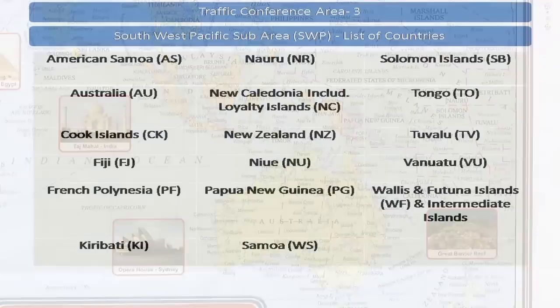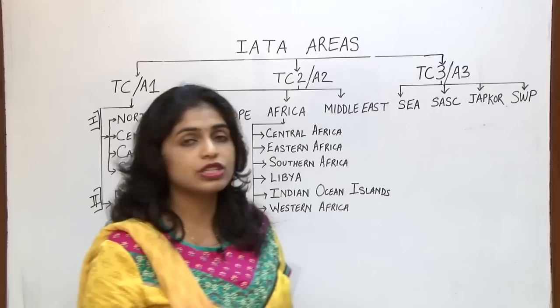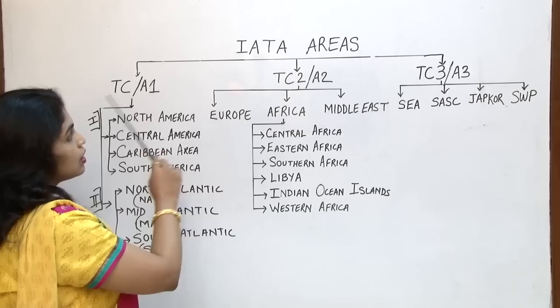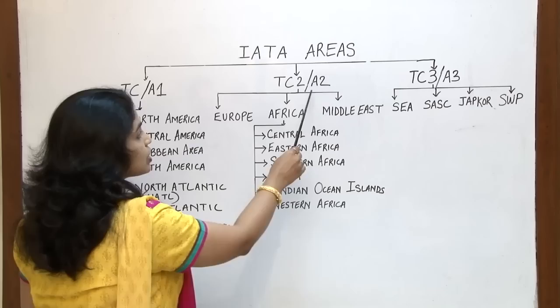Those were the list of countries included in IATA area 3. So that was the entire world divided into IATA areas. Just a quick recap: IATA divides the entire world into three areas — IATA area 1, IATA area 2, and IATA area 3, also known as traffic conference area 1, traffic conference area 2, and traffic conference area 3.